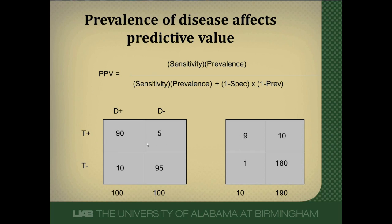I show two tables here. The table on the left has a 50% prevalence of disease — 100 patients with disease and 100 without. The table on the right has a 5% prevalence — 10 out of 200 patients with disease. I've kept the sensitivity and specificity the same in both tables: sensitivity is 90%, specificity is 95%. But looking at predictive values, at 50% prevalence the post-test probability is 95%, whereas at 5% prevalence it drops to only 47%. The take-home message, again, is always calculate your individual patient's post-test probability and do not rely on the diagnostic test study report.